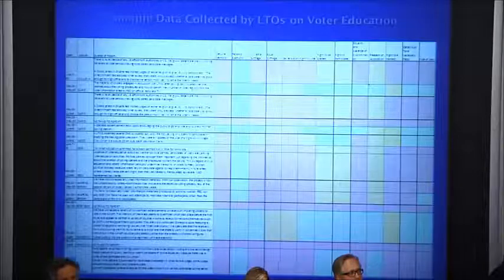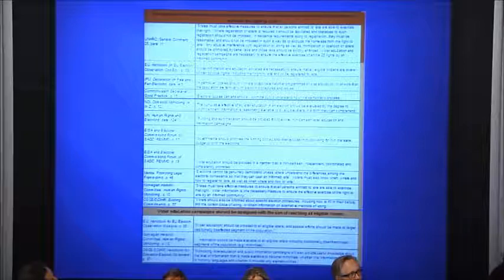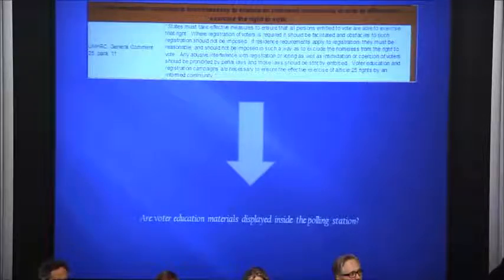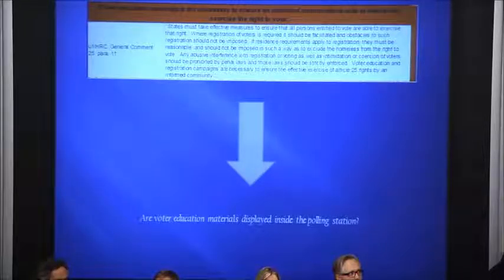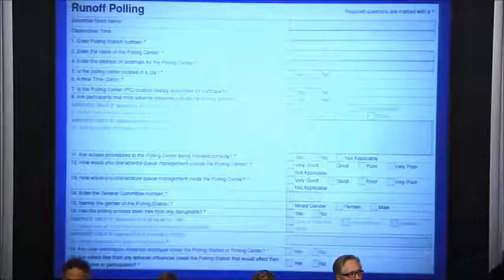To talk about how we use this to develop our checklists: this is an example of the same table David showed, but looking at voter education. We pull the questions for our observation forms directly from international law sources. For instance, the UN Human Rights Committee's general comment makes clear that voter education is essential to the enjoyment of the right to vote, per the International Covenant. So we start asking questions such as: 'Are voter education materials displayed inside the polling station?' — directly related to the obligations, included in the checklist.